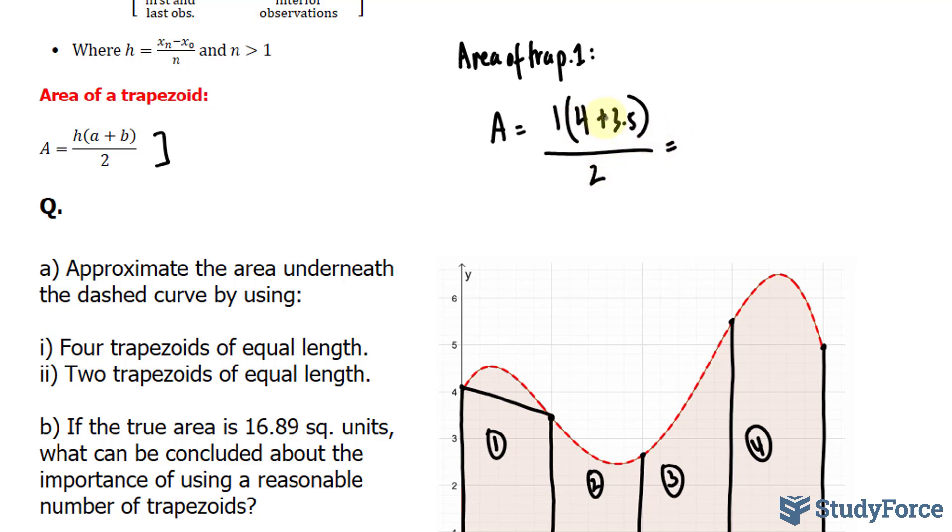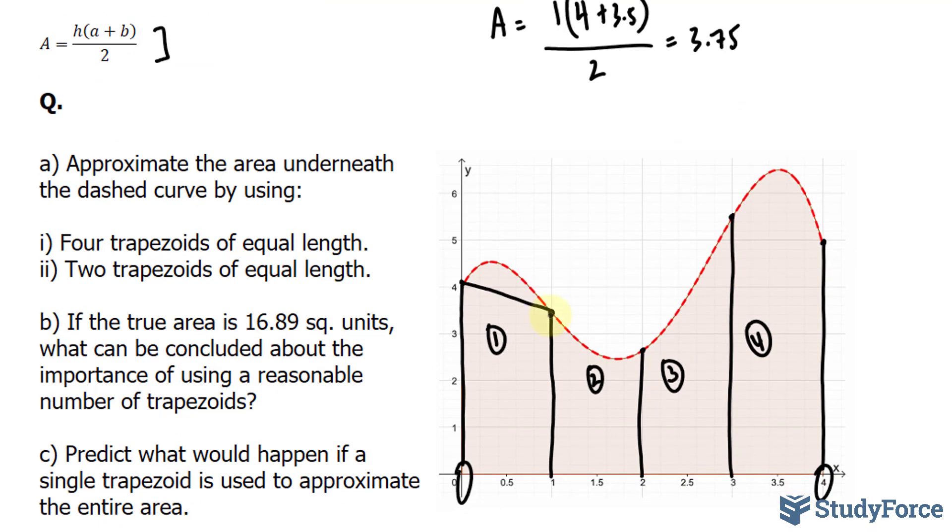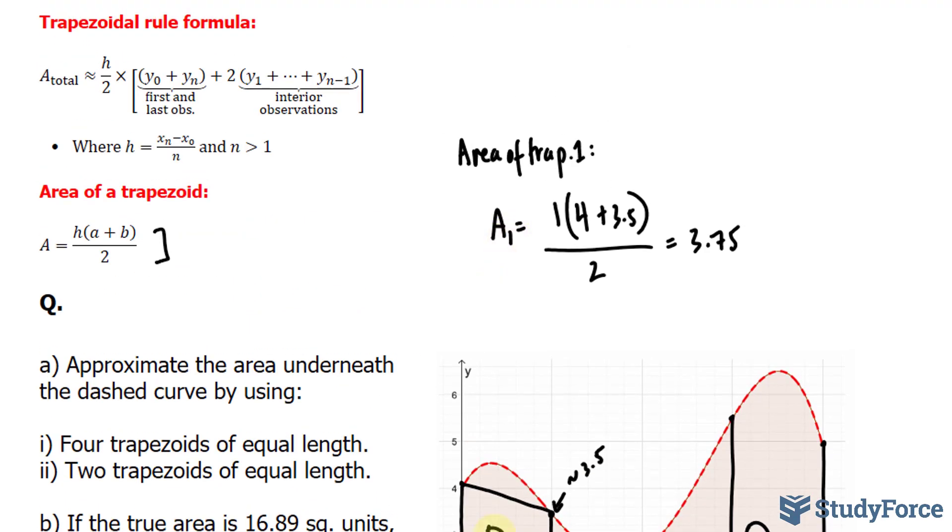4 plus 3.5 is 7.5. Divide by 2 makes 3.75. Now, the fact that we eyeballed this to be roughly 3.5 along the y-axis is the reason why we call this technique an approximation technique. Because someone could have easily interpreted this as 3.4 or 3.6, and that would lead to an area, specifically area of trapezoid 1, that is a little different than ours. So, do expect some slight variations from one person to another.